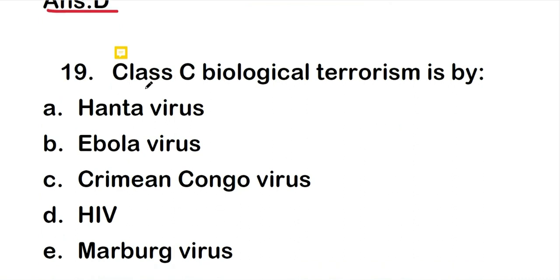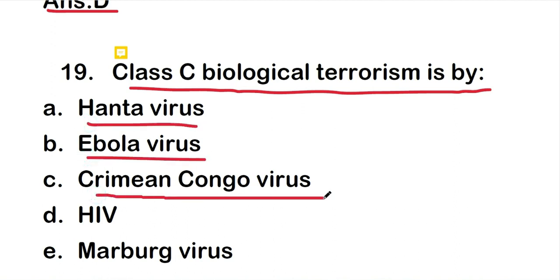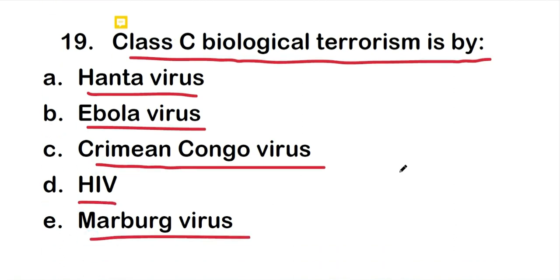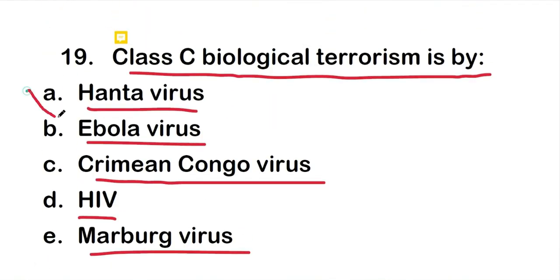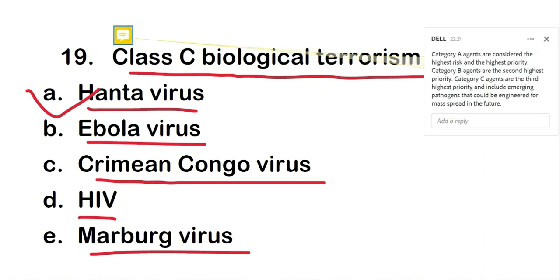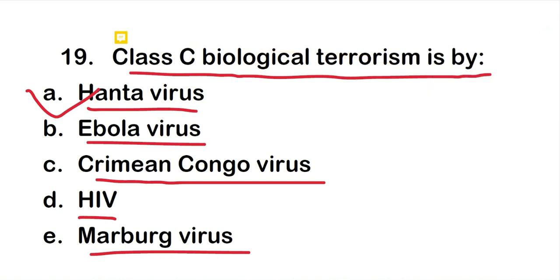Question 19: Class C biological terrorism agents include — Hantavirus, Ebola virus, Crimean-Congo virus, HIV, or Marburg virus? The right answer is option A: Hantavirus. Category A agents are the highest priority, Category B are second highest, and Category C are third highest priority, including emerging pathogens that could be engineered for mass spread in the future as biological terrorism.